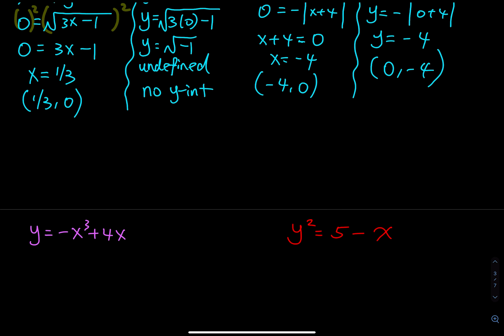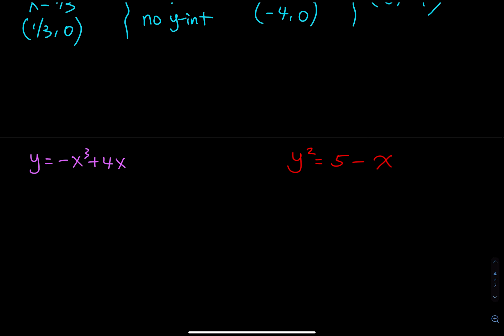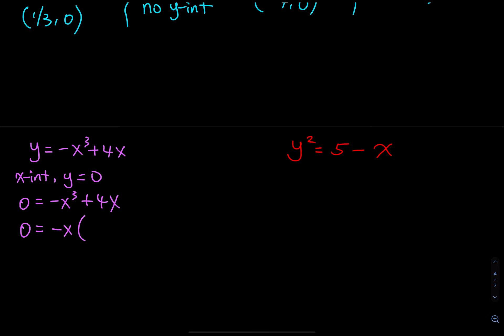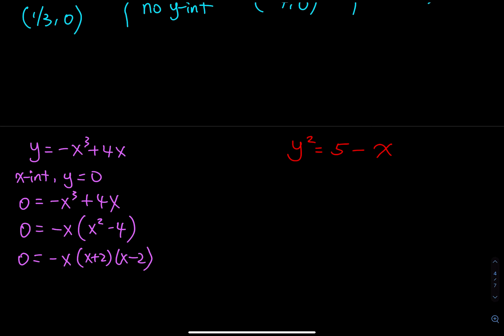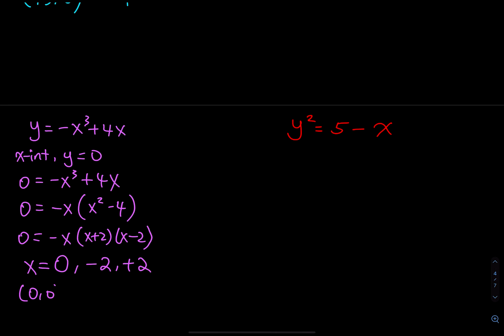We have two more functions. The one on the left has multiple x-intercepts. For the x-intercept, let y equal to 0: 0 = -x³ + 4x. Factoring out negative x gives -x(x² - 4), then further as -x(x + 2)(x - 2). Using the zero product property, x equals 0, negative 2, and positive 2. So the x-intercepts are (0, 0), (negative 2, 0), and (2, 0).